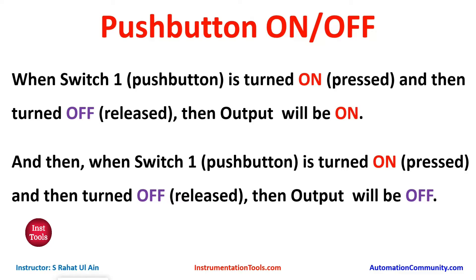Push buttons are simple mechanical switches used to control electrical circuits by manually pressing and releasing them. They are commonly found in a variety of devices and applications — from electronic devices like calculators and remote controls to industrial machinery and control panels. When you press a push button, it completes an electrical circuit, allowing current to flow and triggering a specific action such as turning on a light, activating a motor, or sending a signal. Push buttons can be momentary, meaning they only maintain the electrical connection while held down, or latching, where they stay in the pressed or unpressed state until manually changed.